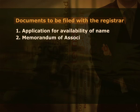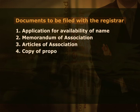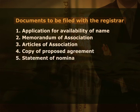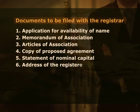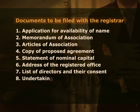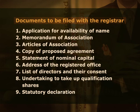Second, memorandum of association. Third, articles of association. Fourth, copy of proposed agreement. Fifth, statement of nominal capital. Sixth, address of the registered office. Seventh, list of directors and their consent. Eighth, undertaking to take up qualification shares. Ninth, statutory declaration.